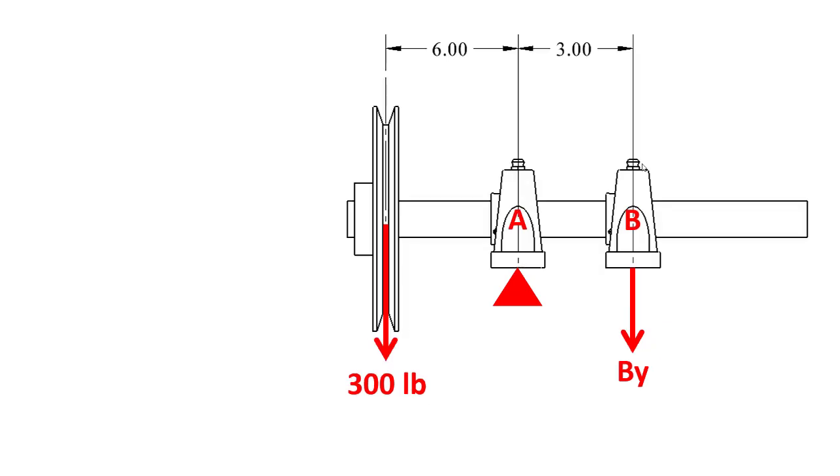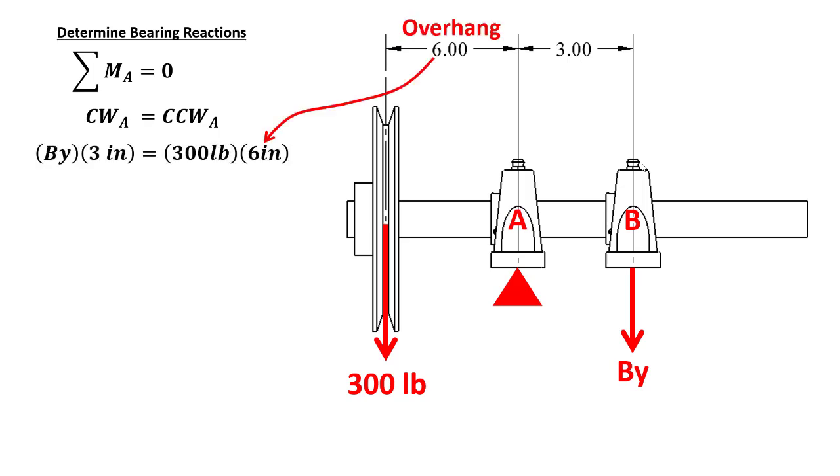Whenever we have forces acting at leverage distances, that should remind you that moments have to balance to maintain static equilibrium, which simply means that all the moments about bearing A acting clockwise must equal all the moments about bearing A acting counterclockwise. Sure I could have said that clockwise moments minus counterclockwise moments equals zero, but this is mathematically the same and is easier to visualize. Here is the equation showing the moments that have to balance each other. The overhang distance of 6 inches is the leverage distance for the 300 pounds, and the bearing spacing of 3 inches is the leverage distance for the reaction load on bearing B.